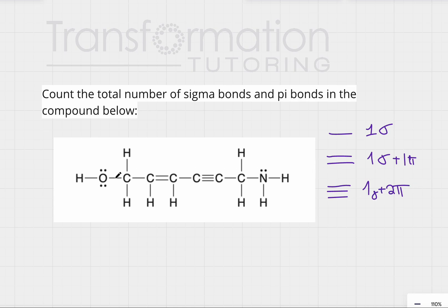So let's go ahead and count first our pi bonds. We have a double bond here, that's one pi bond, and we have a triple bond here, that's two pi bonds. How many pi bonds do we have together? We have three pi bonds.